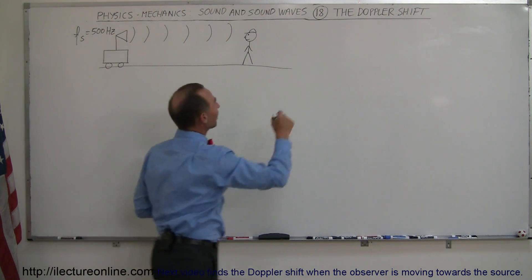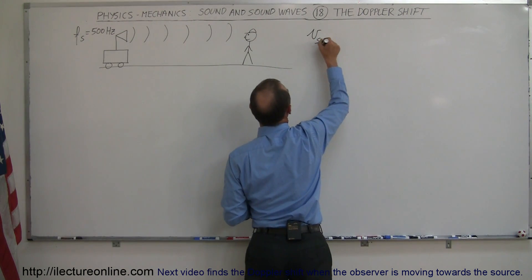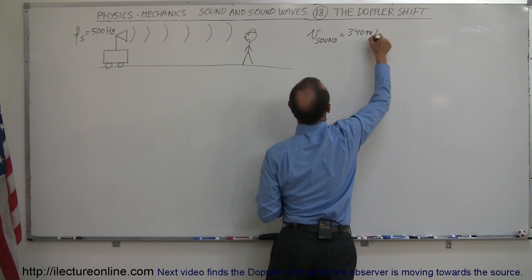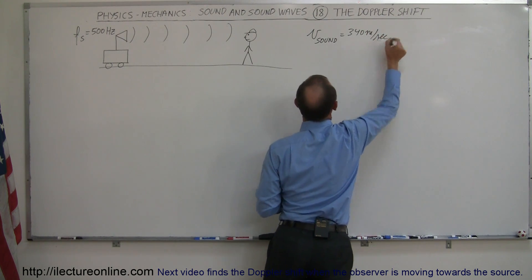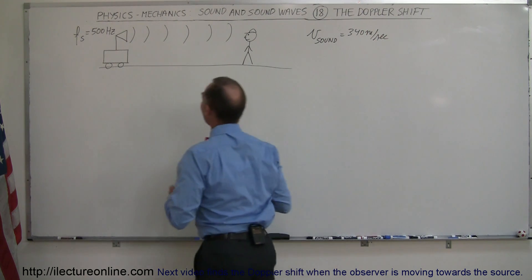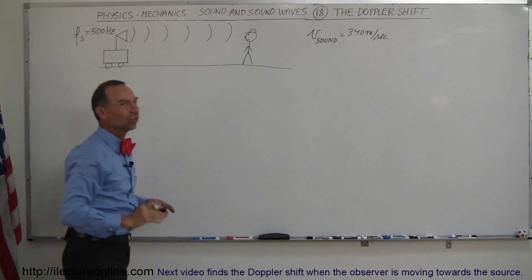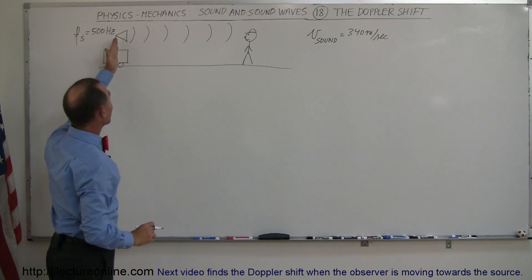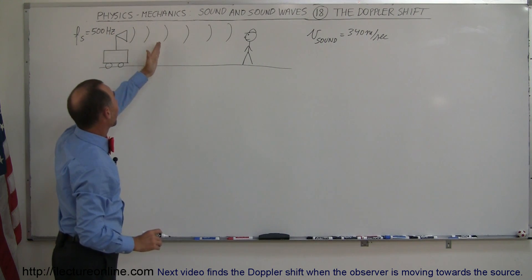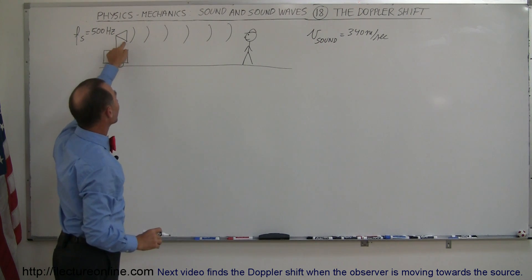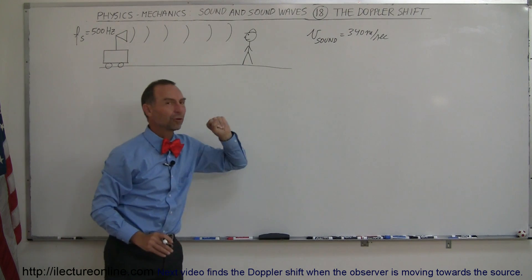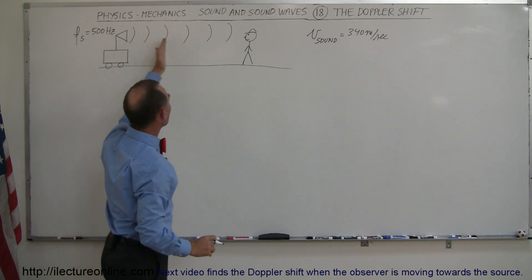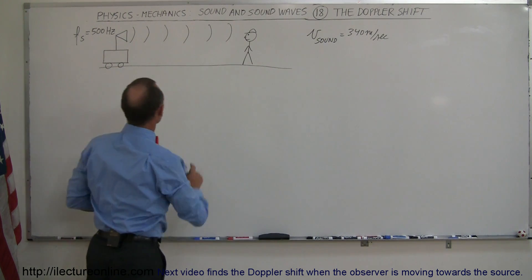Let's say that the velocity of sound is equal to 340 m/s. At the moment, they're both stationary. Sound is being produced and sound waves emanate away from the source at a speed of 340 m/s, and eventually reach the observer.